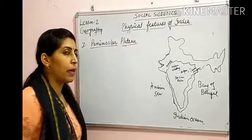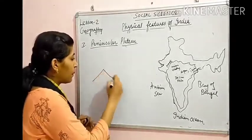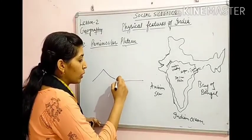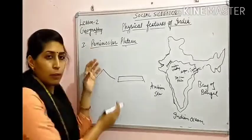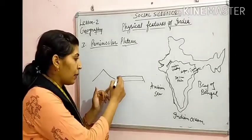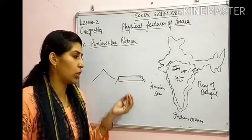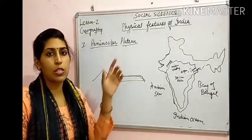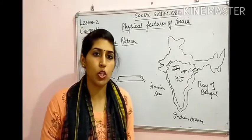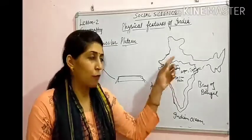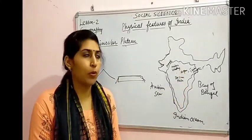Plateau में hills या peaks नहीं होतीं, but यह region आस-पास के regions से ऊपर उठा हुआ है। यह ऊपर इसलिए उठा था क्योंकि volcanic activity हुई थी — जब Indian-Australian plate और Eurasian plate आपस में टकराए थे, उससे इस plateau का formation हुआ। The Peninsular Plateau is further divided into two parts: the Central Highland and the Deccan Plateau.